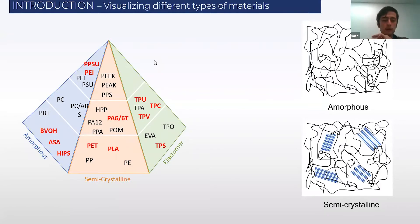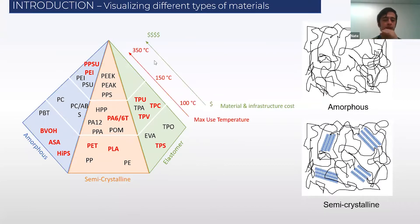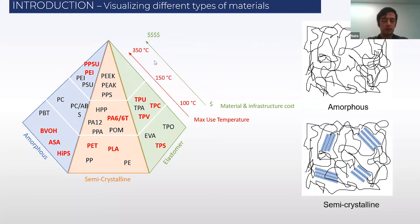I wanted to include this visual just to help end users separate all the different types of materials that are out there, and why they're different and how their mechanical properties depend on these structures that you see here in the picture. On the left-hand side, you see amorphous in the blue triangle, semi-crystalline in that orange slice, and finally elastomer in that green slice.